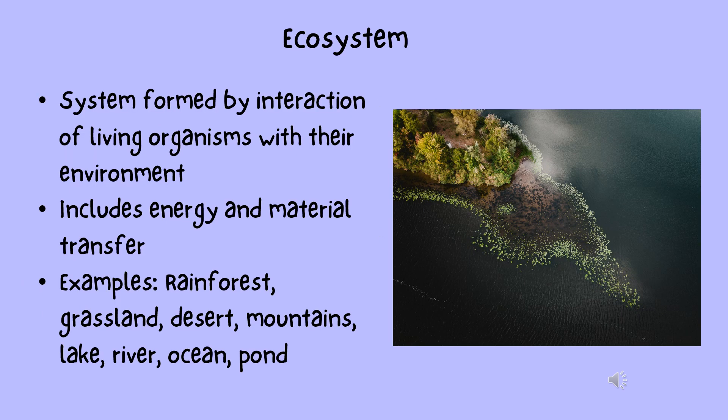An ecosystem is formed by the interaction of living organisms with each other and their environment. This system involves the transfer of energy and materials. Examples include rainforests, grasslands, deserts, mountains, lakes, rivers, oceans, and ponds. All plants, animals, and humans depend on their surroundings and each other. This interdependence forms an ecosystem, which can be as large as a rainforest or as small as a pond.